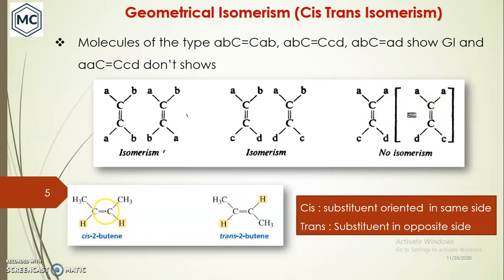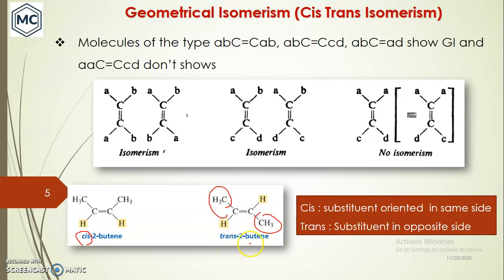For example, cis-2-butene and trans-2-butene. In cis-2-butene, the two methyl groups are on the same side — that is called cis. In trans-2-butene, the methyl groups are on opposite sides — that is called trans. So in cis, substituents are oriented or locked on the same side, whereas in trans they are locked on opposite sides.